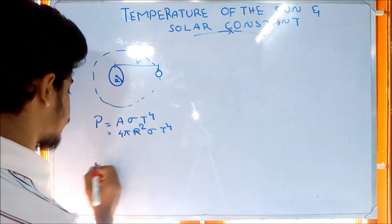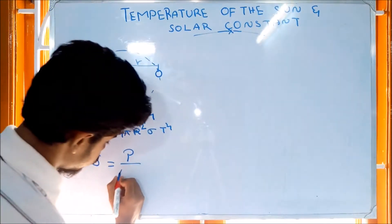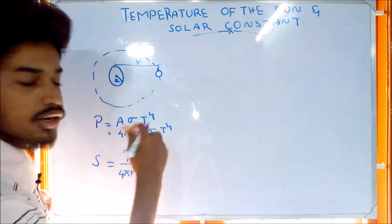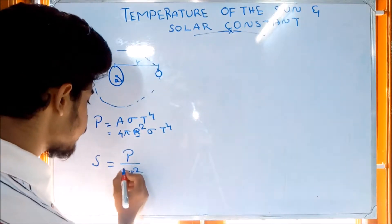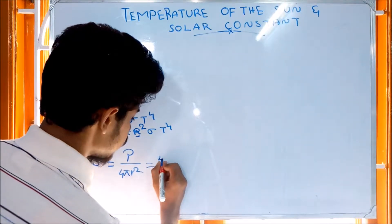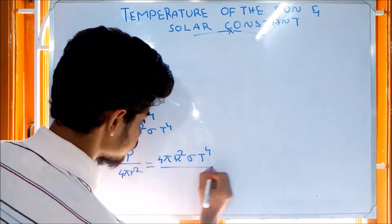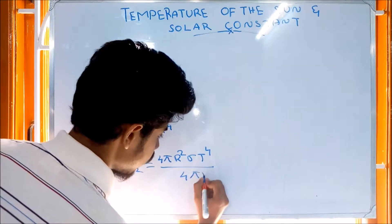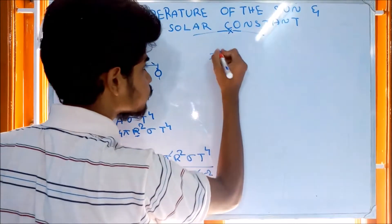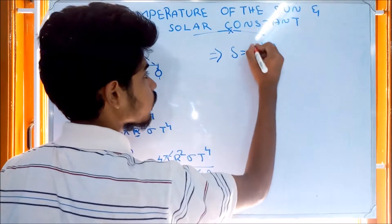Now we will see the solar constant. What is the solar constant? P is equal to A. Here is the radius. Let's say P — so if you want to see the value of this, it is 4 pi r squared sigma T to the power of 4. Divide by this value, 4 pi r squared. The 4 pi cancels.